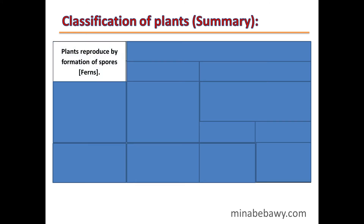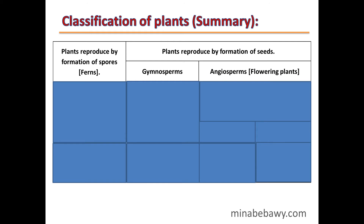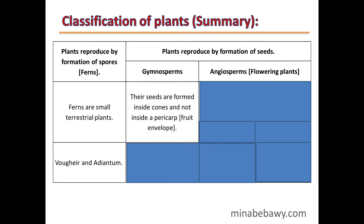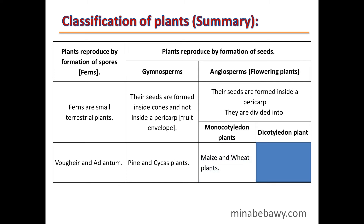Summary of plant classification: plants are classified into those reproduced by spores — ferns such as bracken fern and adiantum — and those reproduced by seeds, which are divided into gymnosperms (seeds in cones, e.g. pine and sequoia) and angiosperms or flowering plants, subdivided into monocotyledon plants such as maize and wheat, and dicotyledon plants such as bean and pea.